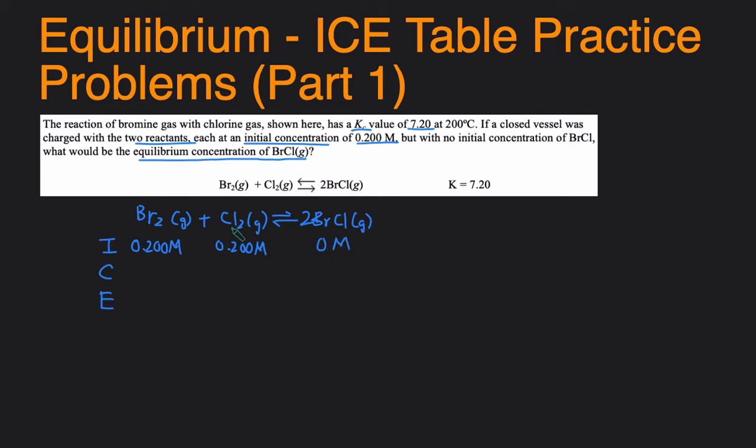Since the reaction started with just reactants and no products, that means this reaction is going to proceed towards the product side. So that means the reactants will be consumed and the products will be produced. So for the C line, this will be minus X and minus X. We're using Xs here because we don't know exactly how much will be consumed since this reaction goes to equilibrium and not completion.